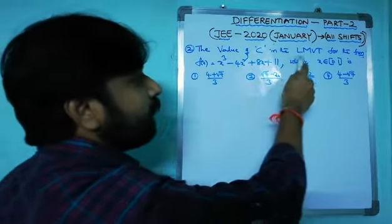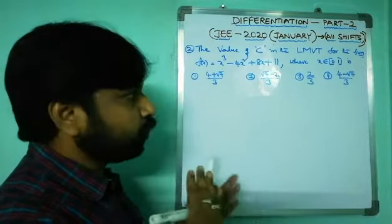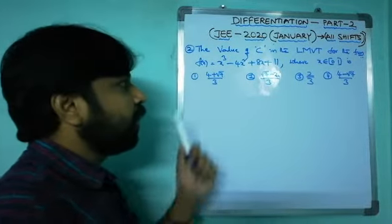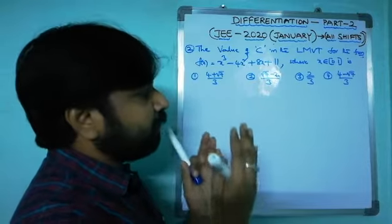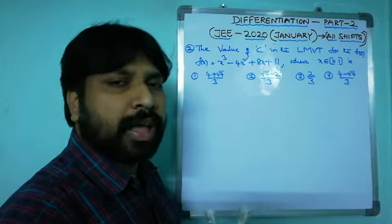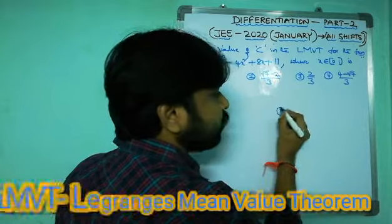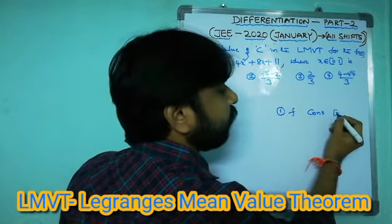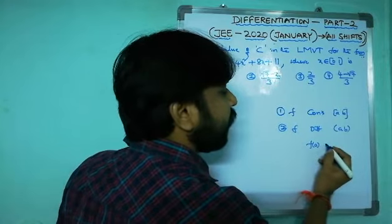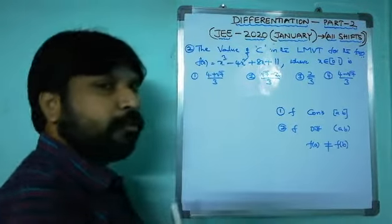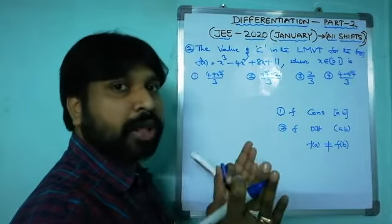Second question: find the value of c in Lagrange's Mean Value Theorem (LMVT) for f(x) = x³ - 4x² + 8x + 11 on [0,1]. LMVT requires: f is continuous on [a,b], f is differentiable on (a,b), and f(a) ≠ f(b). If f(a) = f(b), Rolle's theorem applies instead.